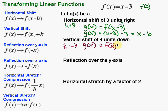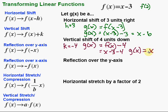So g of x is going to be equal to f of x plus k, which is f of x plus negative 4, which is f of x minus 4. Going back to our f of x — which is x minus 3 — we replace it: x minus 3, and then minus 4 on the outside. We can clean that up, and we end up with g of x equal to x minus 7. So a vertical shift of four units down gives us g of x equals x minus 7.